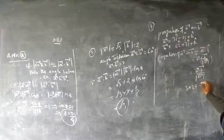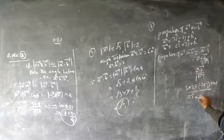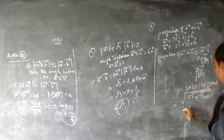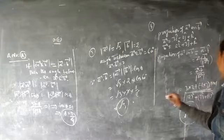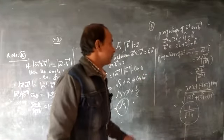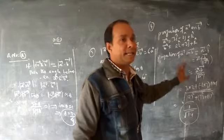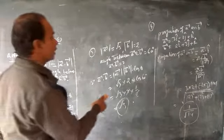The projection of a on b is given by a · b̂ = (a · b) / |b|. So a · b = (3)(2) + (-2)(3) + (1)(1) = 6 - 6 + 1 = 1. And |b| = √(4 + 9 + 1) = √14. Therefore the projection of a on b is 1/√14.